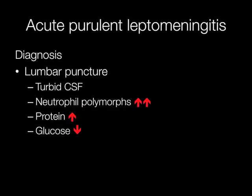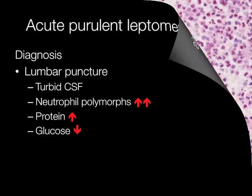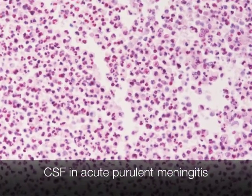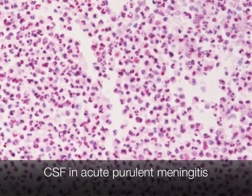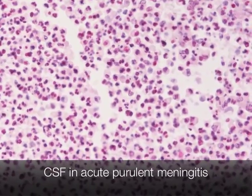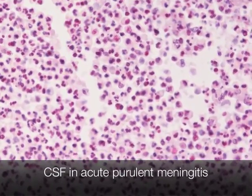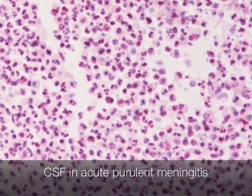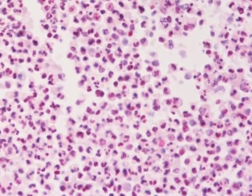In acute purulent leptomeningitis, the lumbar puncture findings are a turbid CSF. The number of neutrophil polymorphs present is significantly increased, there is also an increase in protein, but glucose is decreased. This is the CSF from a patient who had acute purulent leptomeningitis, and you can see an exudate composed almost entirely of neutrophil polymorphs.